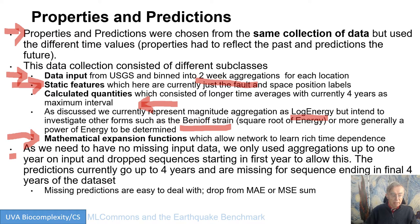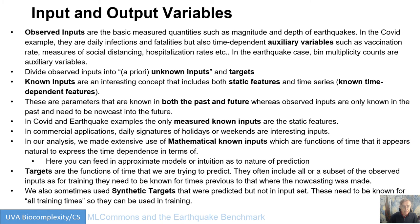We can have missing data on output, so all we need is at least one output value, which means we can take a sequence which ends on the last-but-one two-week time interval. Now here's some terminology from the Google Temporal Fusion Transformer. These are the observed inputs — that's what you actually measure, for example in the COVID or medical example, daily infections or fatalities.